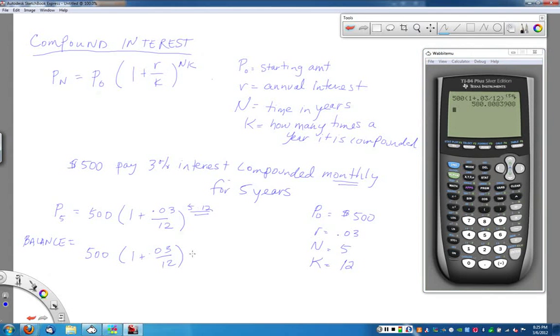And that will take everything to the 5 times 12 power. So in this case, when I do that, I get $580.81. And that's terrific. That's exactly what I want.